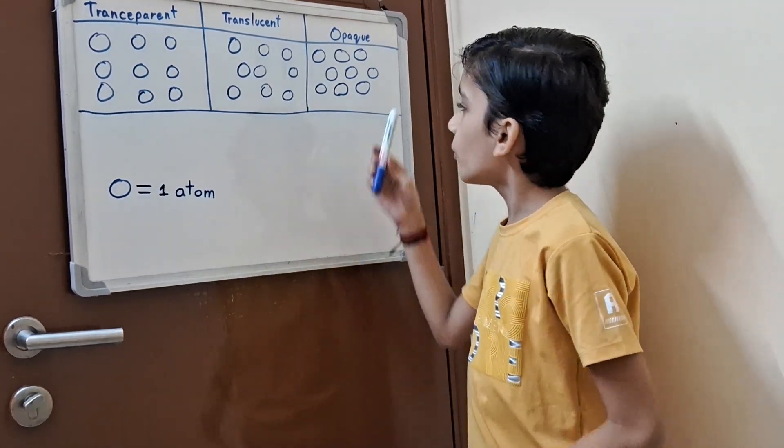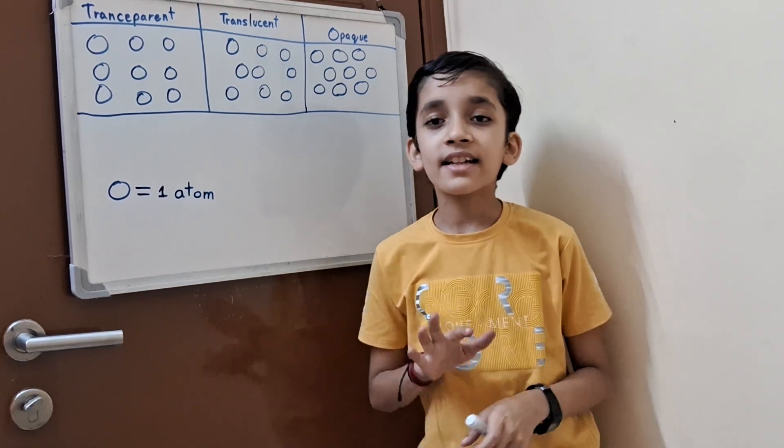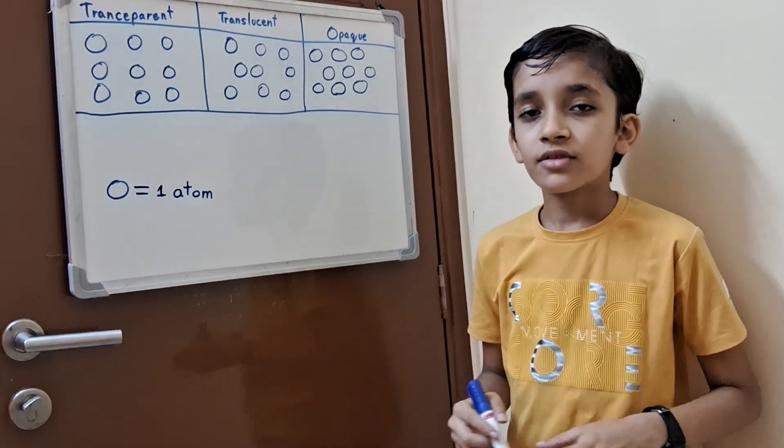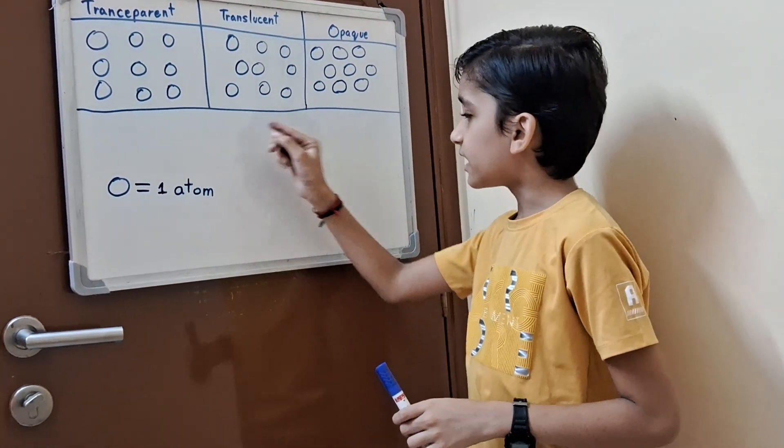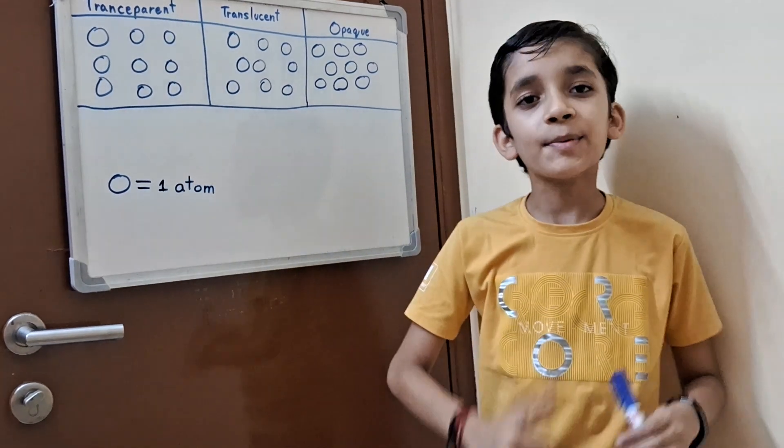Now let's move to opaque. Opaque is we can't see anything through that. So these are the different properties of transparency.